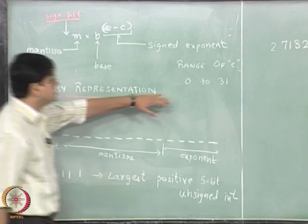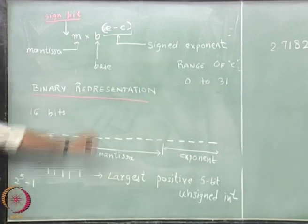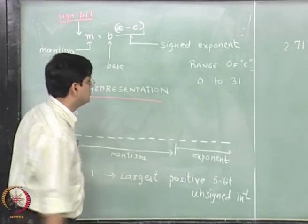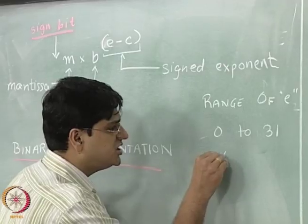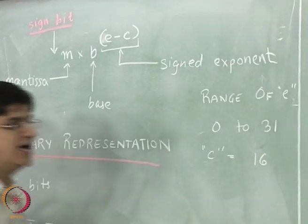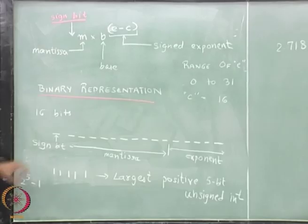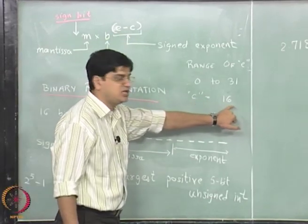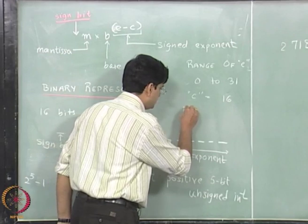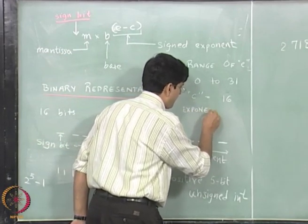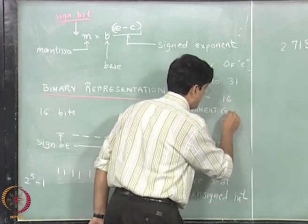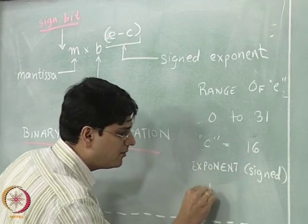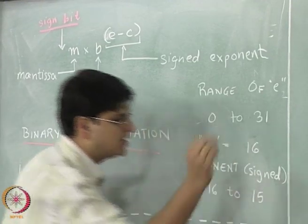Because this range goes from 0 to 31, what we will do is choose C as 32 divided by 2, that is 16. So we will choose C in this particular representation as 16. With E going from 0 to 31 and with the value of C equal to 16, the signed exponent will go from minus 16 to plus 15.